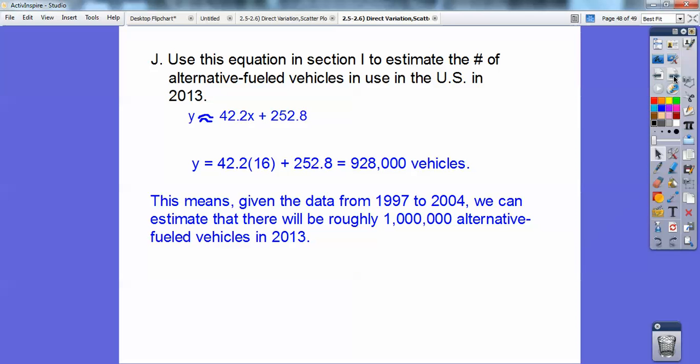So this means given the data from 1997 to 2004, we can estimate that there will be roughly, and your answers might be a little bit different. Mine were different last year when I picked two other points that were closer, whatever your lines you picked, but it should be pretty close as long as you did everything correctly. So I'm going to estimate there's about a million alternative fuel vehicles in the United States in 2013.